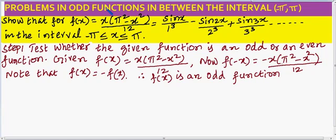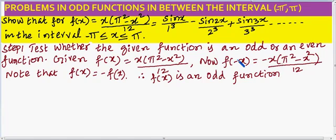The problem is in the odd functions section, so we have to test whether the given function is odd or even. Given f(x) = x(π² - x²)/12, let us find f(-x). It equals (-x)(π² - x²)/12. Comparing f(x) and f(-x), we find f(-x) = -f(x), so the given function is an odd function.